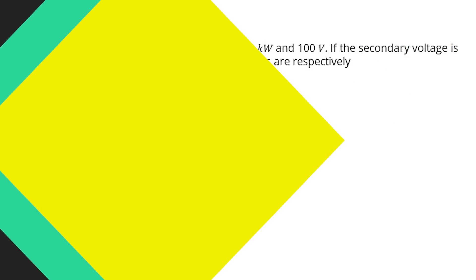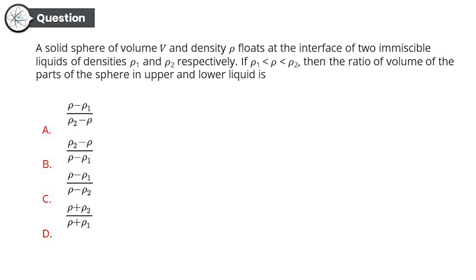Let's move on to the sixth question. A solid sphere of volume V and density ρ floats at the interface of two immiscible liquids of densities ρ₁ and ρ₂ respectively. If ρ₁ < ρ < ρ₂, then the ratio of volume of the parts of the sphere in upper and lower liquid is: